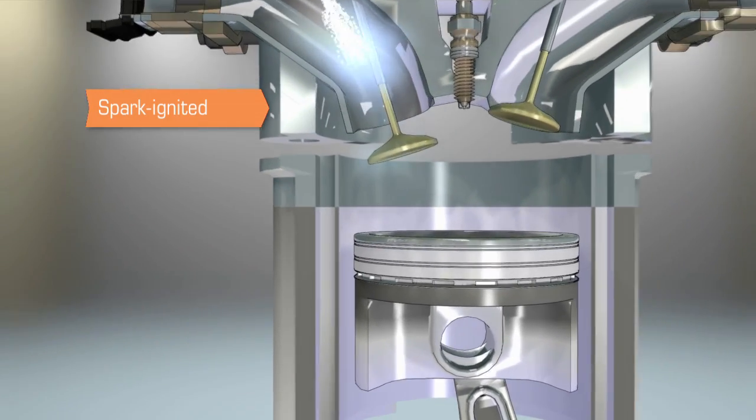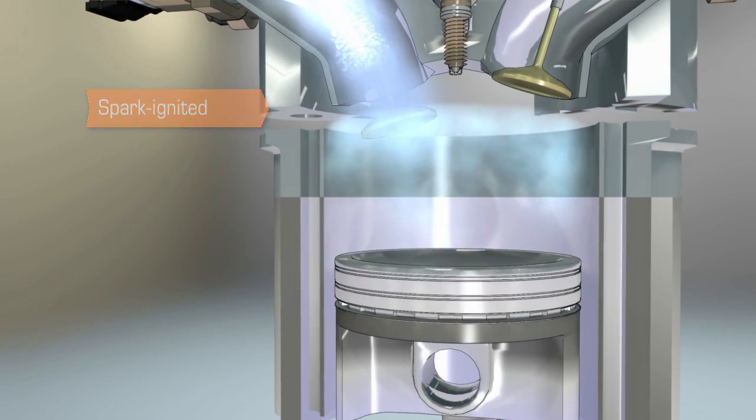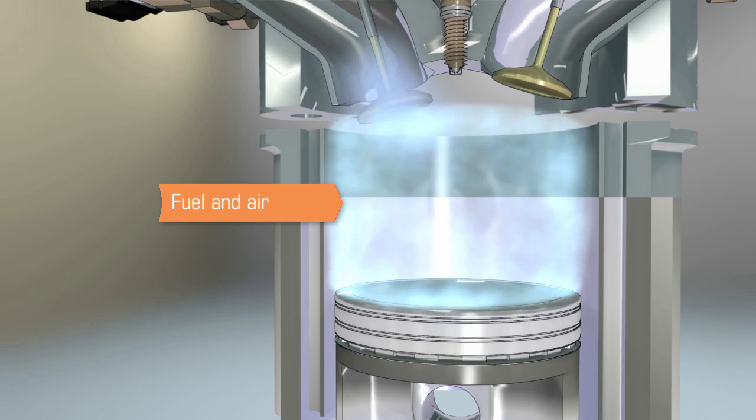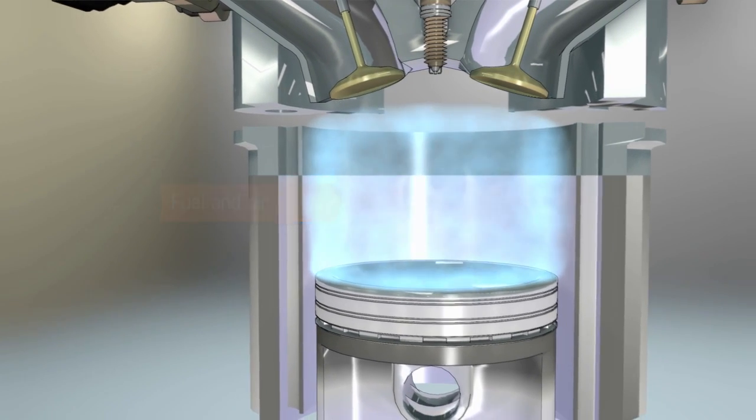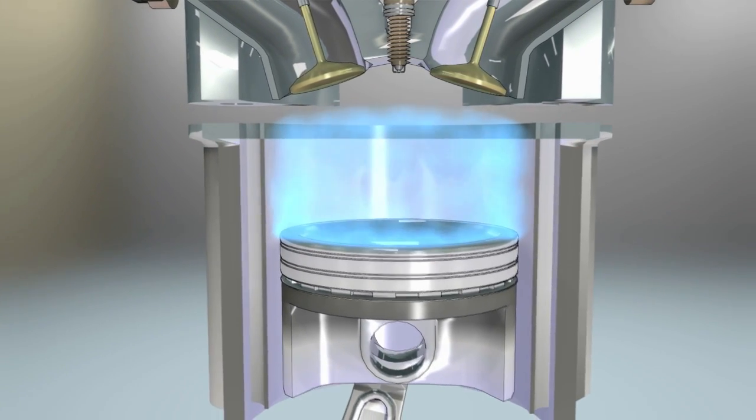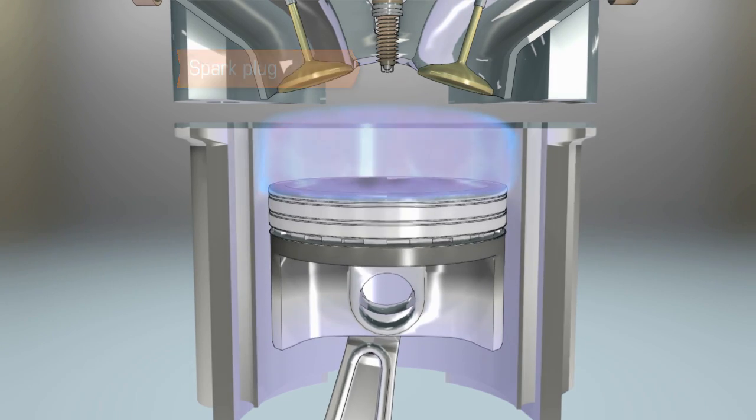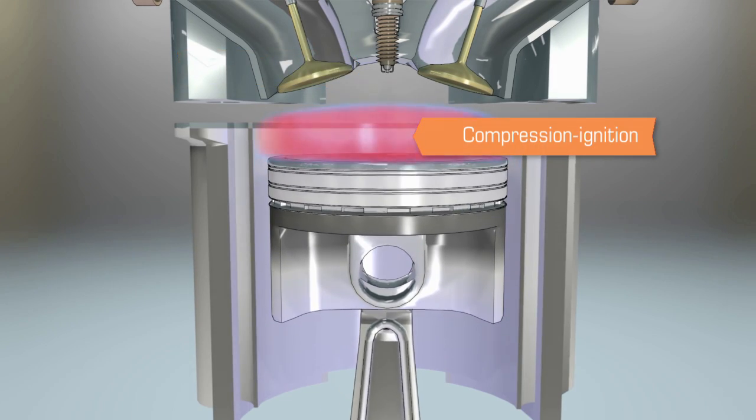Gasoline engines are often called spark ignited engines. In these engines, a mixture of fuel and air is normally pre-mixed in the intake system before entering the combustion chamber. A spark plug is then used to time the combustion for optimal performance.